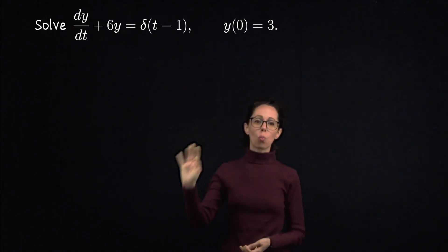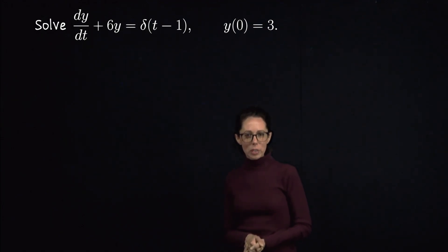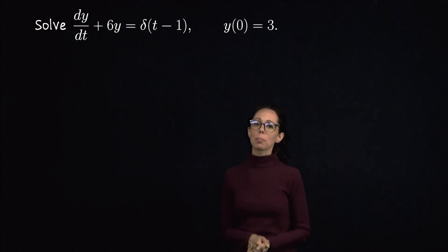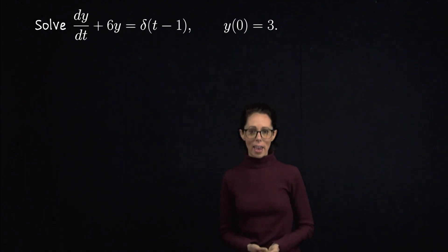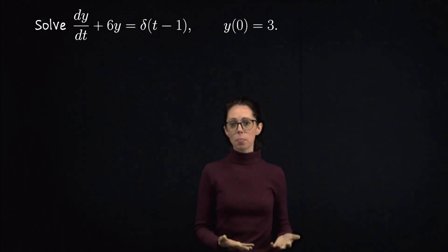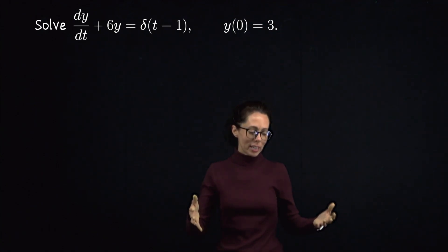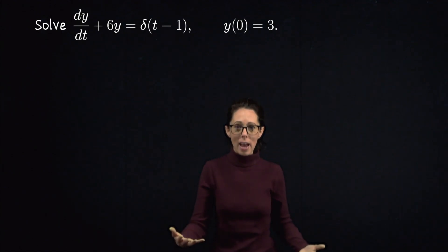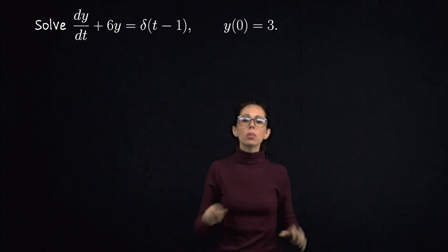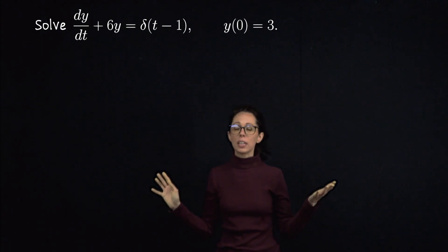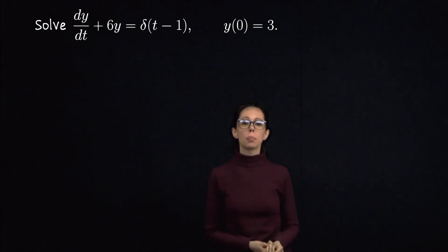When t is less than 1, the right-hand side is 0. So between t equals 0 and t equals 1, our solution should behave like the solution to y' plus 6y equals 0, which is y' equals negative 6y — that's exponential decay. Then at one unit of time, we strike it. We take this decaying position function and hit it with a hammer. But once we hit it, there's no more force beyond that. So we gave it an impulse and let it go — after t equals 1, we go back to exponential decay. Exponential decay, hit it, more exponential decay.